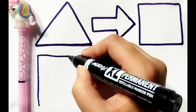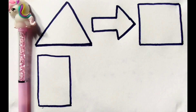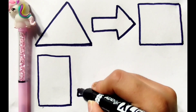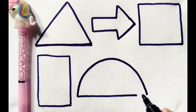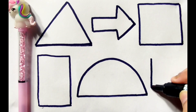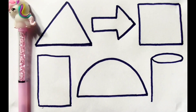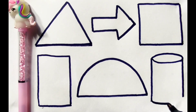Square. Rectangle. Semi-circle. Slender.